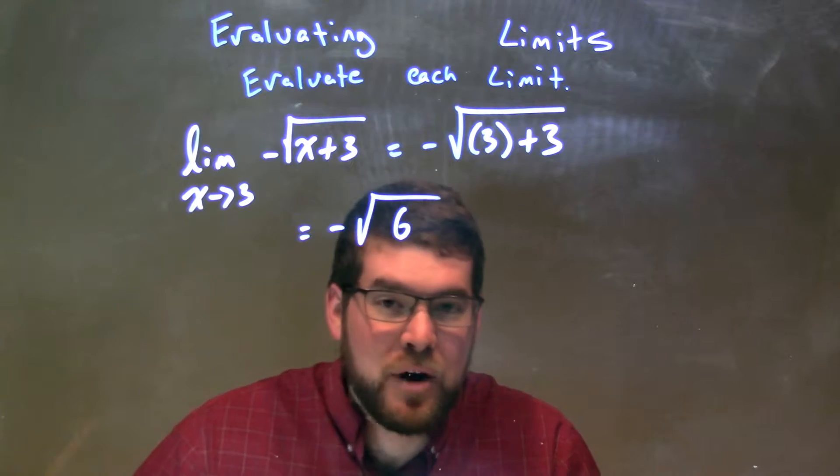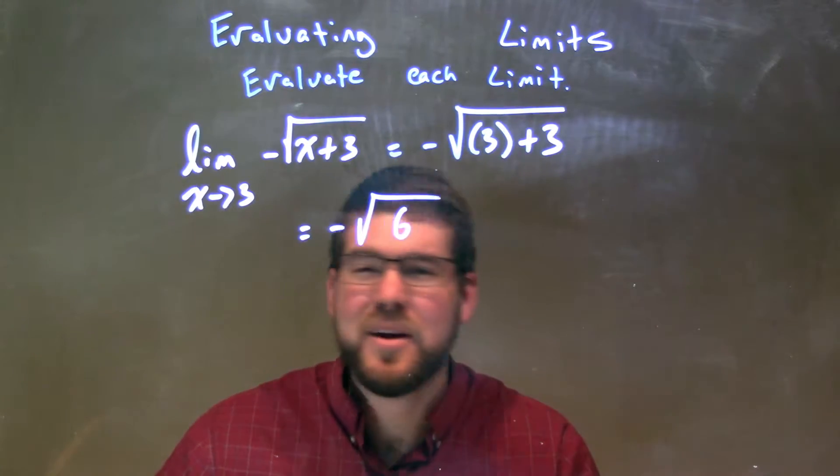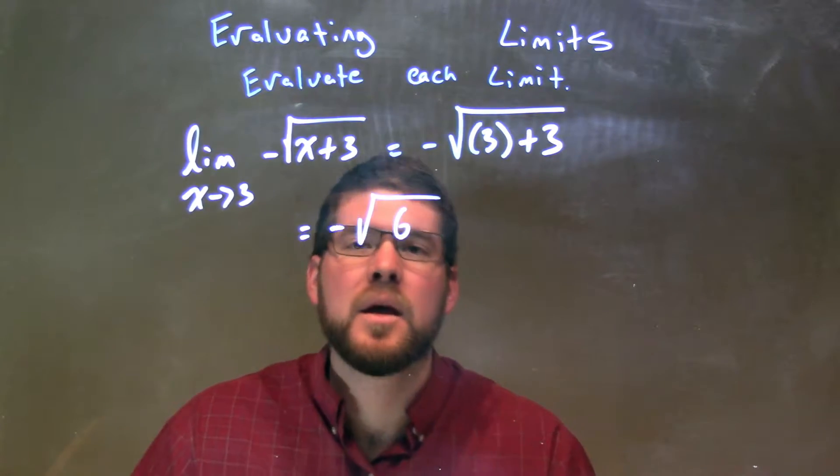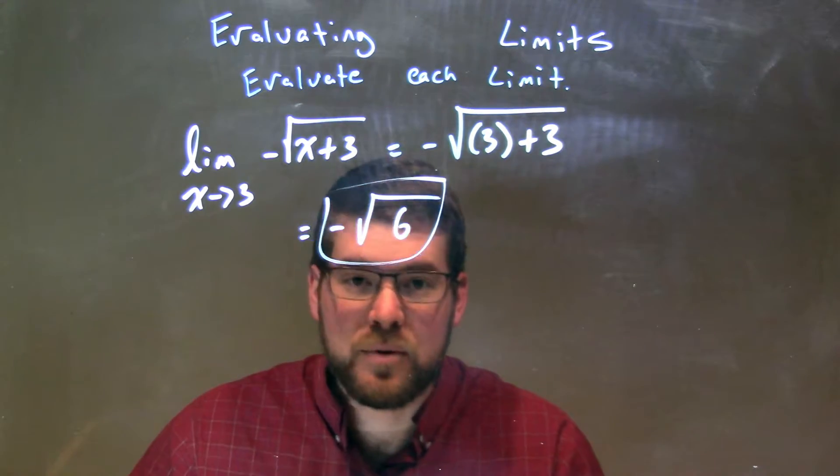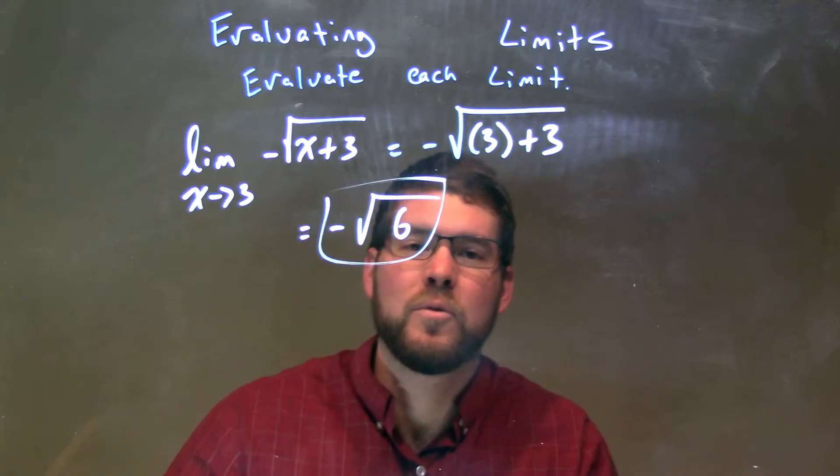Now some people might be interested to do prime factorization, but this one really can't break down anymore because 6 is 2 times 3. There's nothing that you can really pull out. So our final answer here to this limit is negative square root of 6.